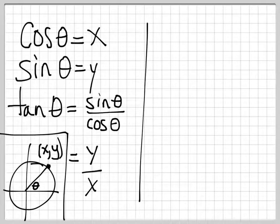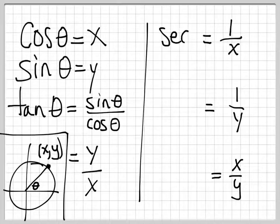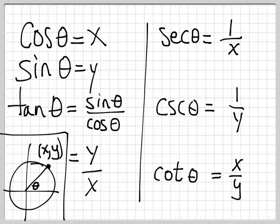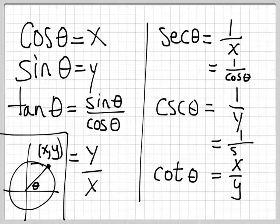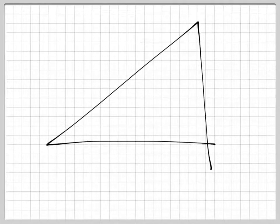What we're going to do is come up with functions which are 1 over x, 1 over y, and instead of y over x, x over y. Those are going to be called secant theta, cosecant theta, and cotangent theta. Secant is 1 over cosine of theta because it's 1 over x. Cosecant is 1 over sine because it's 1 over y. And cotangent, instead of being sine over cosine, it's cosine theta over sine theta. What we have now is all possible ratios for our unit triangle.